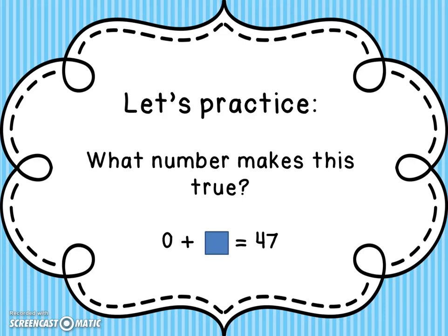What number makes this true? Zero plus something equals 47. This time we switched it up. Remember, any time a number plus zero, you get the same number, so the answer is 47. Here's one more: something plus zero equals 123. That's exactly right — it's 123.